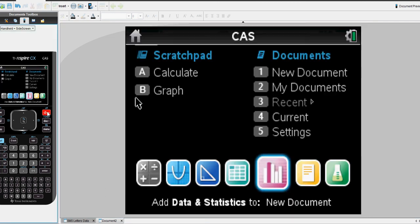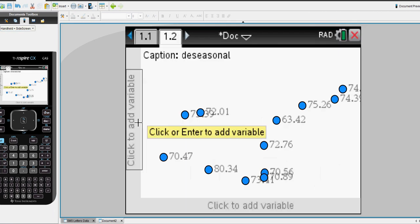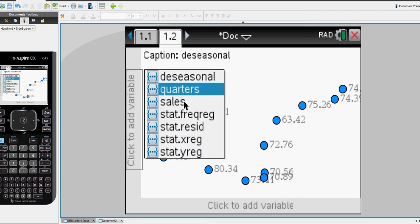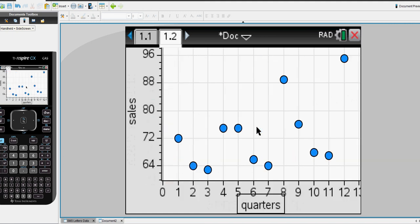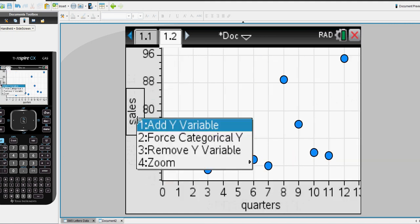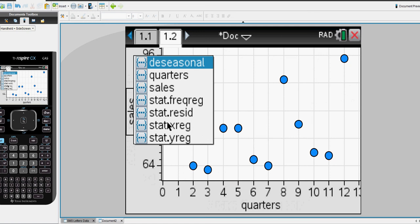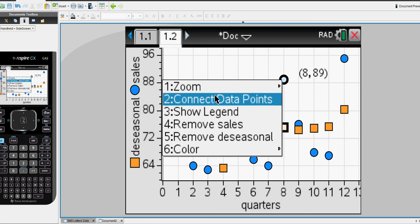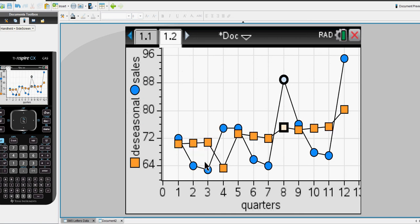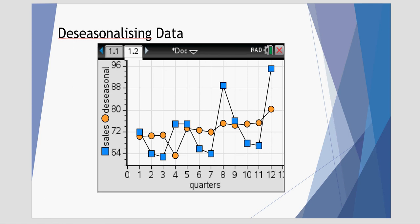We go across the menu and we'll do a graph. First, we'll look at our sales against our quarters. Now we can right click, add a variable, and we'll add in our deseasonalized. There are our two sets of data. Of course, we can connect the data points for both. That should hopefully look very similar to what I had earlier in my notes.